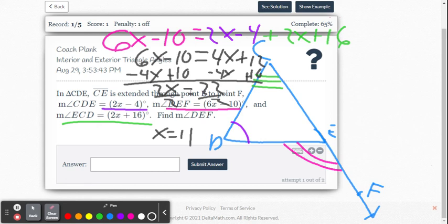But whoa, don't enter that in as your answer. Read the directions. It says find the measure of angle DEF. Well, DEF, that is our pink angle there. That's our exterior angle. So we need to substitute the 11 for x in the expression 6x minus 10. So we're going to go 6 and then we're going to substitute that 11 for the x minus 10. 6 times 11 is 66 minus 10.